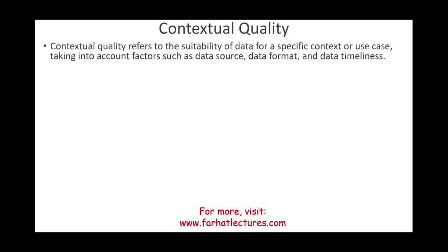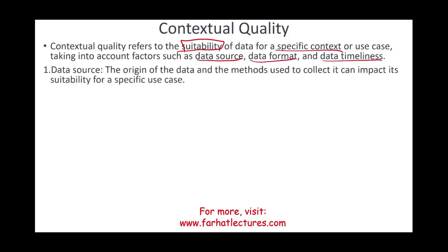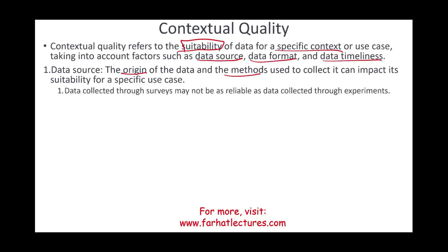The second dimension is contextual quality of the data — referring to the suitability of the data for a specific context, use, or decision. This takes into account factors such as data source, data format, and data timeliness, which we discussed in the prior session. Regarding data source: the origin of the data and the method used to collect it impacts its suitability. For example, data collected through surveys may not be as reliable as data collected through experiments, because respondents don't know the purpose and therefore cannot answer in a specific way.